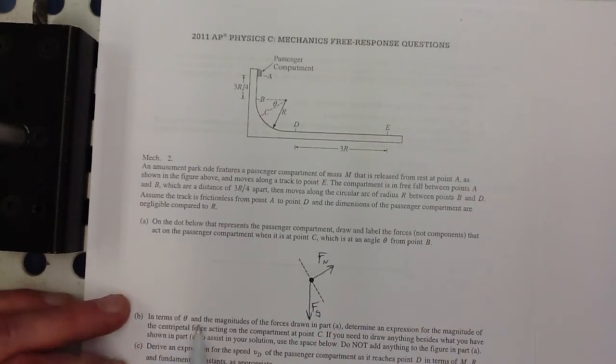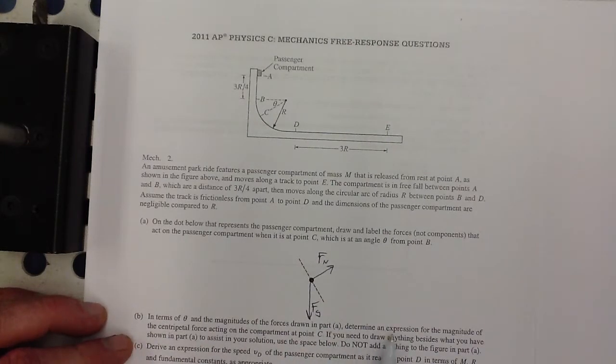Now part B, they want, in terms of theta and the magnitudes of the forces drawn in part A, determine an expression for the magnitude of the centripetal force acting on the compartment at point C. If you need to draw anything besides, don't draw on this. Okay, so let's go ahead and draw it again then.